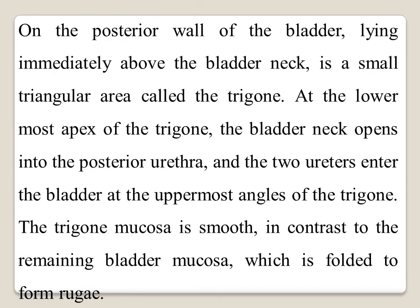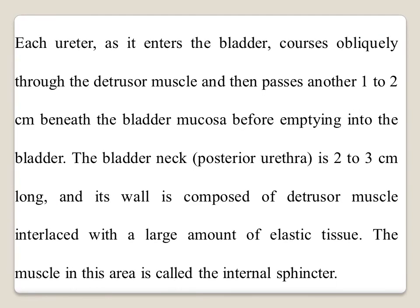On the posterior wall of the bladder, immediately above the bladder neck, is a small triangular area called the trigone. At the lowermost apex of the trigone, the bladder neck opens into the posterior urethra. The two ureters enter the bladder at the uppermost angles of the trigone. The trigone mucosa is smooth, in contrast to the remaining bladder mucosa which is folded to form rugae. The ureters enter obliquely through the detrusor muscle and pass one to two centimeters beneath the bladder mucosa before emptying into the bladder.